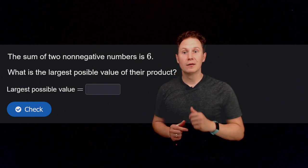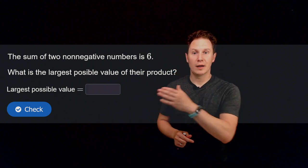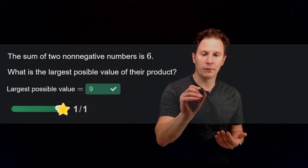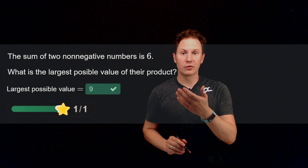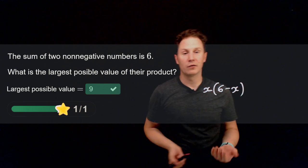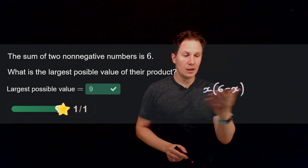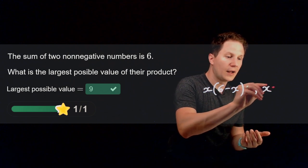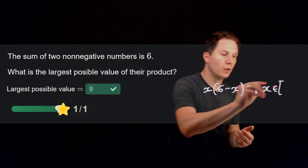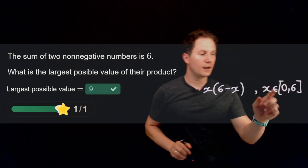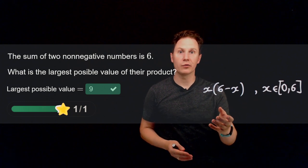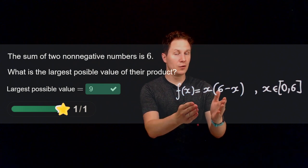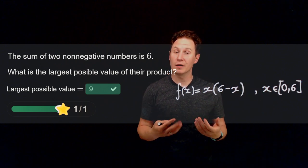Next: the sum of two non-negative numbers is 6. Find the largest possible value of their product. Call one of them x; the other is forced to be 6 minus x. The product is x times (6 minus x). Since x is defined on the closed interval between 0 and 6, both x and 6 minus x are non-negative, and this function is continuous on a closed interval.